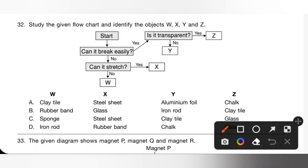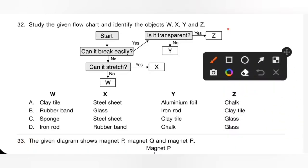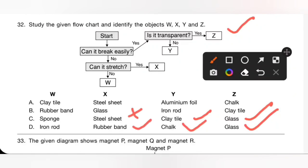Question 32: Study the given flow chart and identify objects W, X, Y and Z. Z is a transparent material, so either option C or D is correct. Y is not transparent. X is a material that can be stretched — that is a rubber band — so option C is incorrect. Option D is the correct answer: W is an iron rod, X is a rubber band, Y is chalk, and Z is glass.